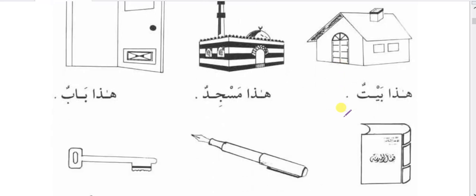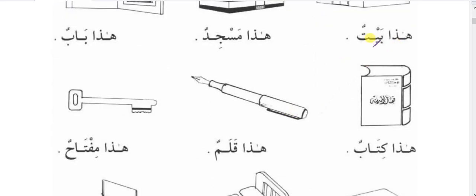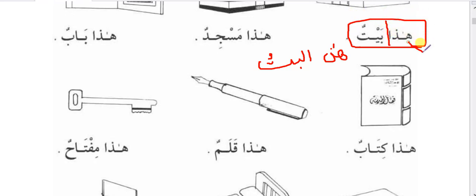There is a huge difference between 'haza baitun' and 'haza al-baitu.' In 'haza baitun,' haza is the isma ishara acting as muptada and baitun is the musharunile acting as khabar. However, in the real isma ishara-musharunile construction, the baitun part is nakera, and musharunile must be maarefa, not nakera.